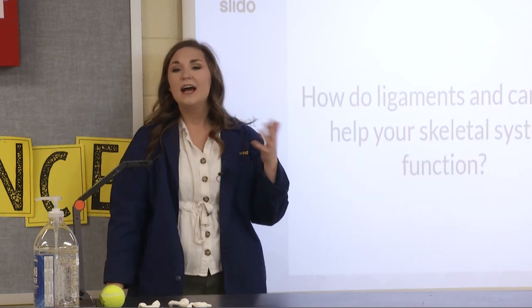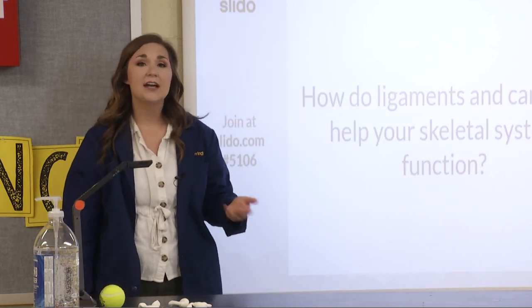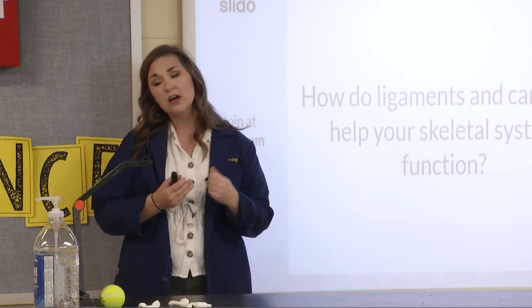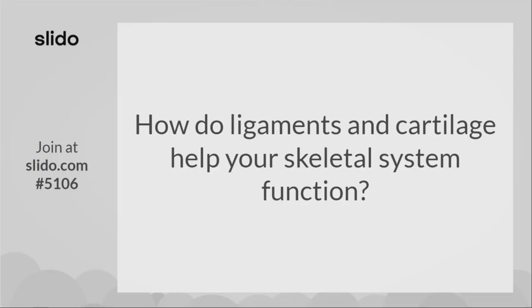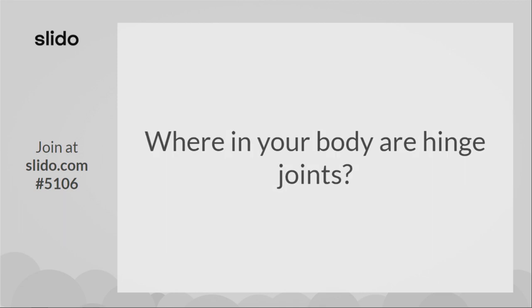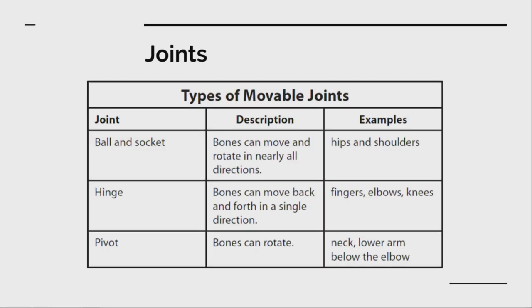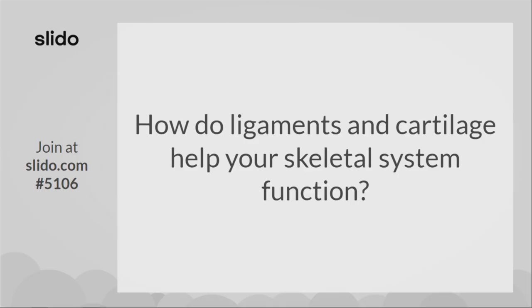Here are a few questions to check your understanding. How do ligaments and cartilage help your skeletal system function? Cartilage is important because it keeps our bones from rubbing together, and ligaments actually connect bone to bone. Where in your body are hinge joints? Fingers, elbows, and knees are your hinge joints.